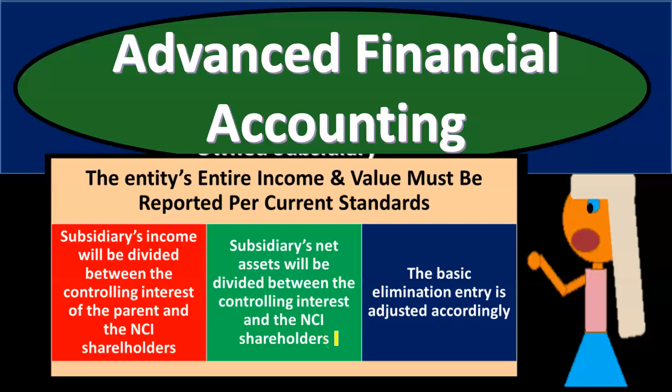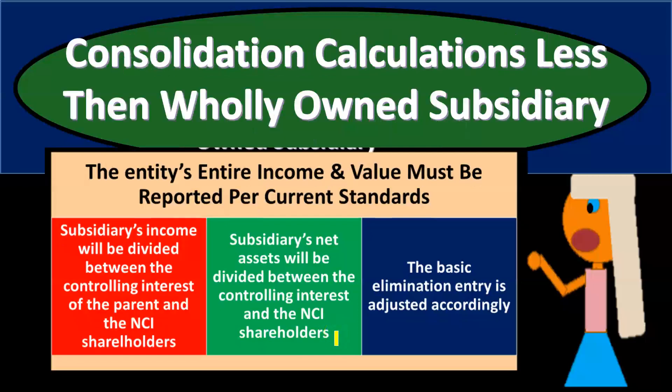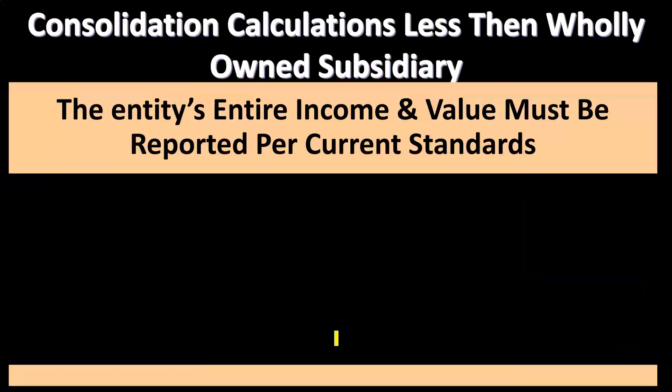Advanced Financial Accounting. In this presentation, we're going to talk about consolidation calculations for less than wholly owned subsidiaries. We have a parent-subsidiary relationship and we're looking at the consolidation process to put the financial statements of the parent and the subsidiary together as if they are one entity, but where the parent does not own 100% of the subsidiary.